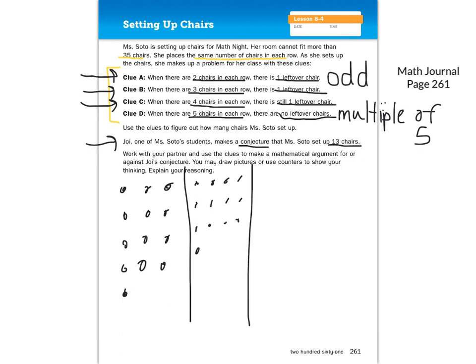When we put five chairs in each row, there should be no leftover chairs. Counting to 13 in groups of five... clue D proves to us that 13 chairs does not work, because if we follow what clue D says, there should be no leftover chairs — but there is one leftover. So 13 is wrong.